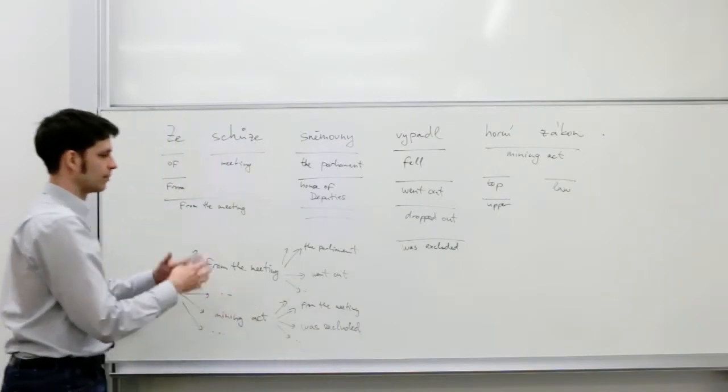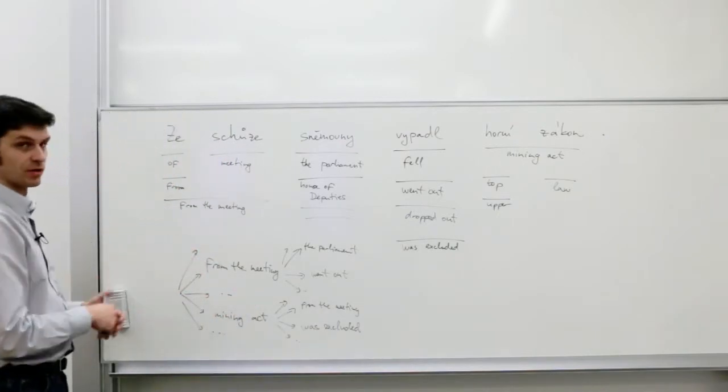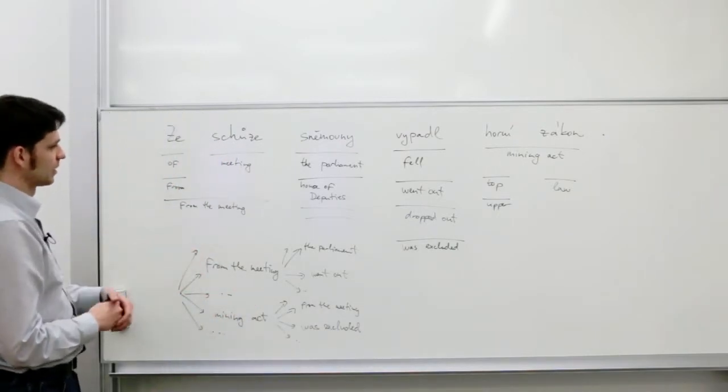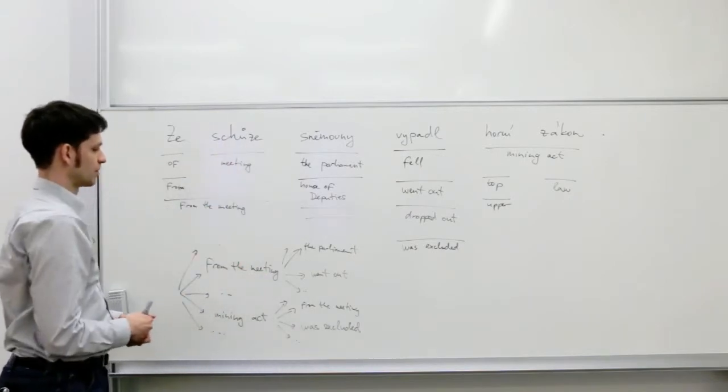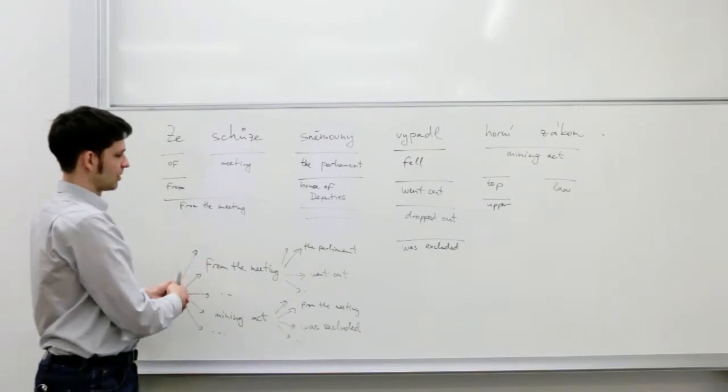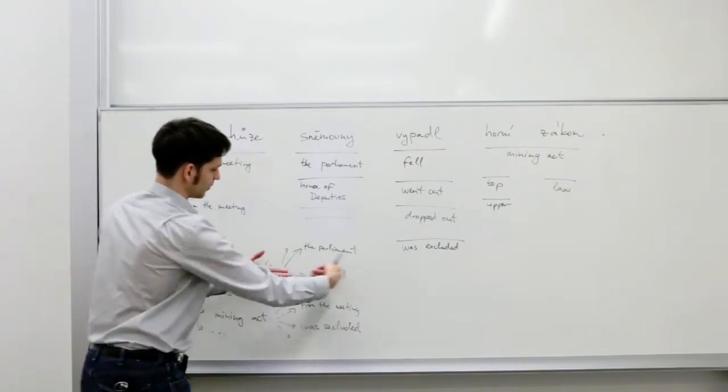Each of these partial hypotheses is scored by a number of scores, by a number of separate models. Some of them indicate how well this English string reflects the original Czech meaning. Some other models reflect how well the words fit together, the puzzle pieces match.